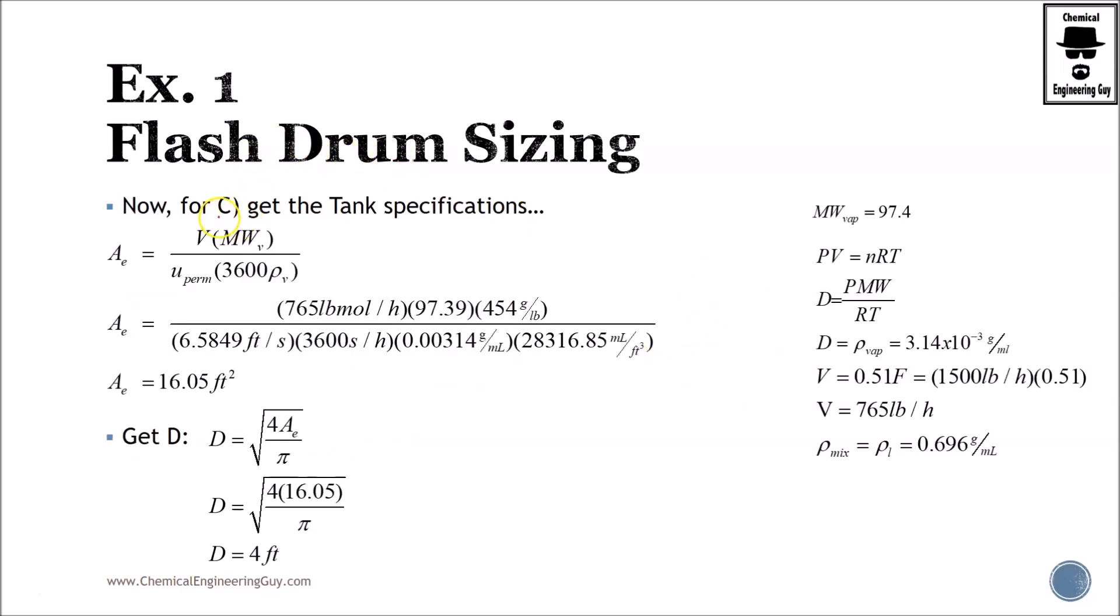Now that we have the permissible velocity, we can continue to set up the specifications of the tank. We will calculate the cross-sectional area, which is the vapor flow rate times the molecular weight of the vapor times the velocity times 3600, which changes seconds to hours, and the density of the vapor. We substitute all the data. If you don't remember them, these are the values right here. We just plug them in and get this value, feet to the square.